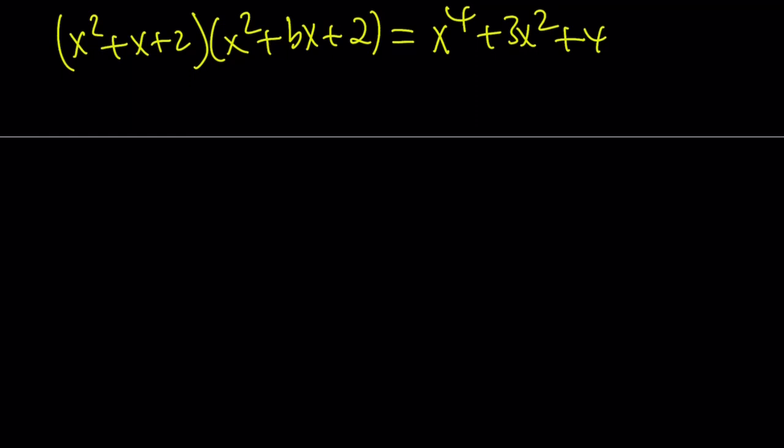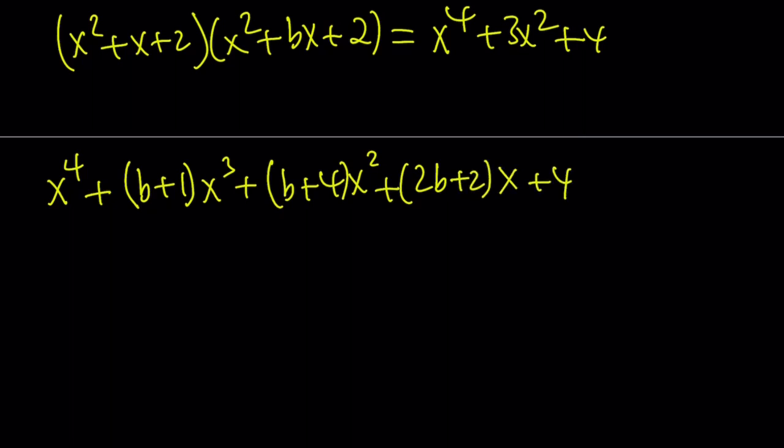Just to spare you the trouble, I'm going to give you what we get from the left-hand side. You're going to get x to the 4th plus b plus 1x to the 3rd plus b plus 4x squared plus 2b, or not 2b. I have to make that joke, right? Times x plus 4. And that is supposed to equal x to the 4th plus 3x squared plus 4.